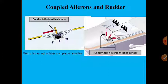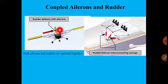A third technique is to couple both the aileron and the rudder together. When you roll, the rudder is operated automatically so that you don't have to separately manage adverse yaw — the control coupling handles it for you.